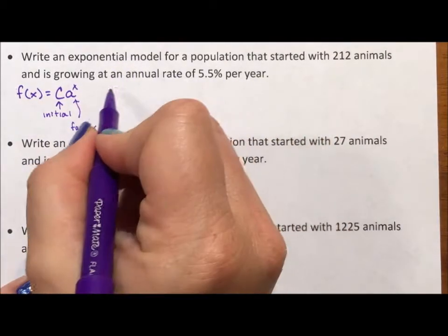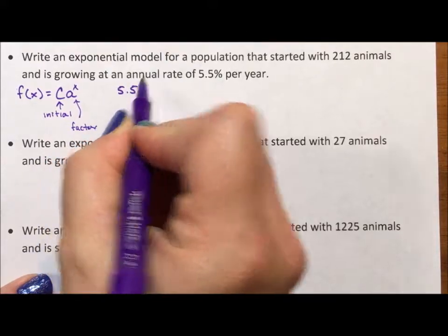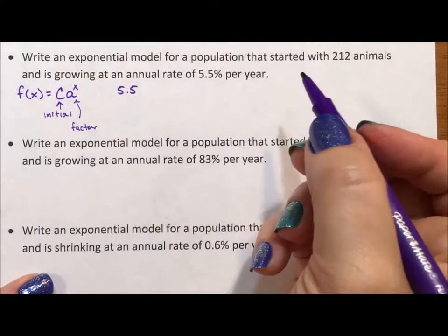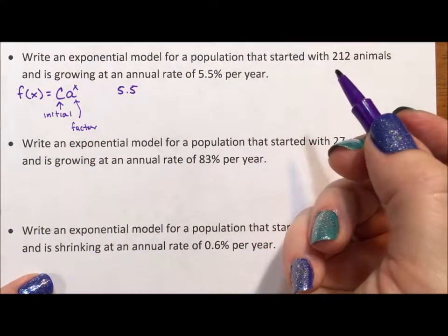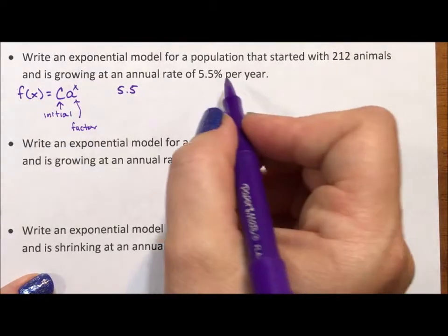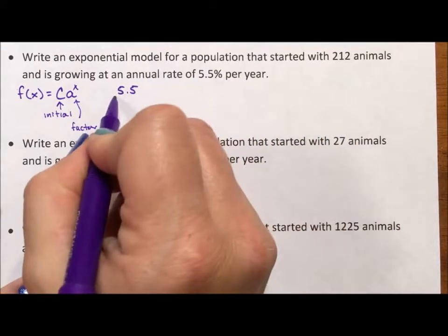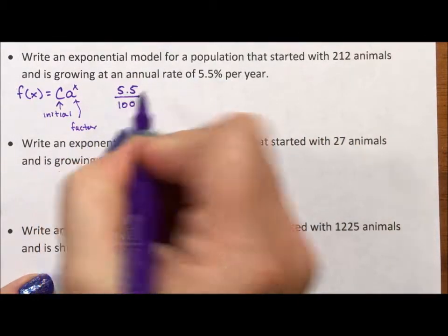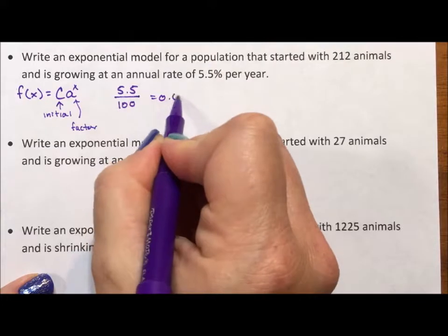First thing I want to do is take that 5.5 percent. Percent literally means per 100. Cent is our prefix for century, 100 years, cents, number of pennies in a dollar. So percent is literally per 100. This is 0.055.